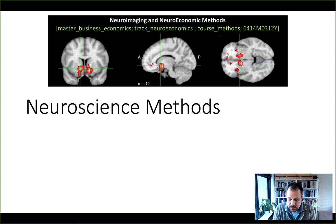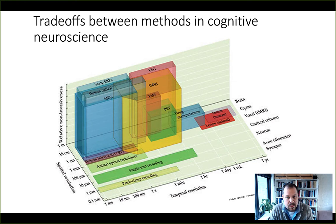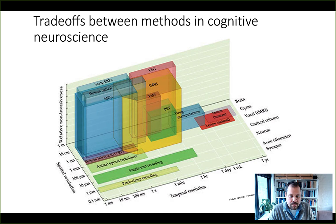First off, there are a number of trade-offs between the methods used in cognitive neuroscience or in neuroeconomics — the trade-off between spatial resolution, temporal resolution, and the relative non-invasiveness of the method used. This is a slide from the fMRI book by Scott Uttel and co-authors.